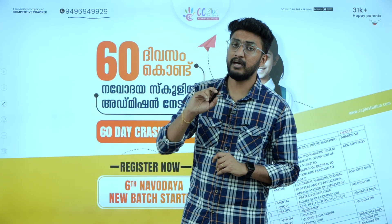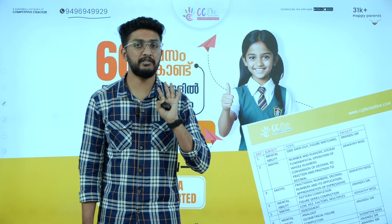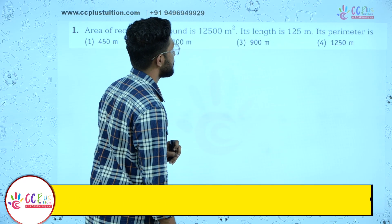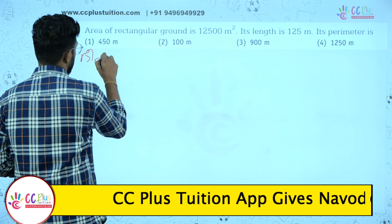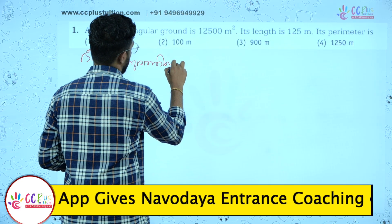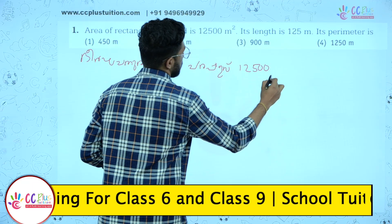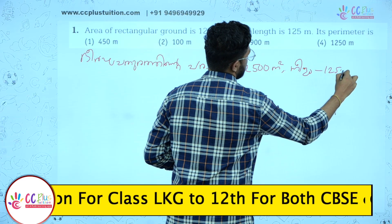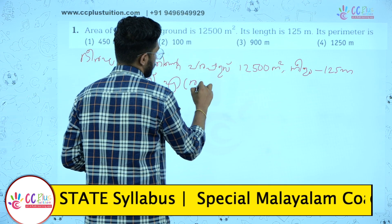Contact number: 9496-994-9929. The area of a rectangular ground is 12,500 meters square. Its length is 125 meters. Find the perimeter.